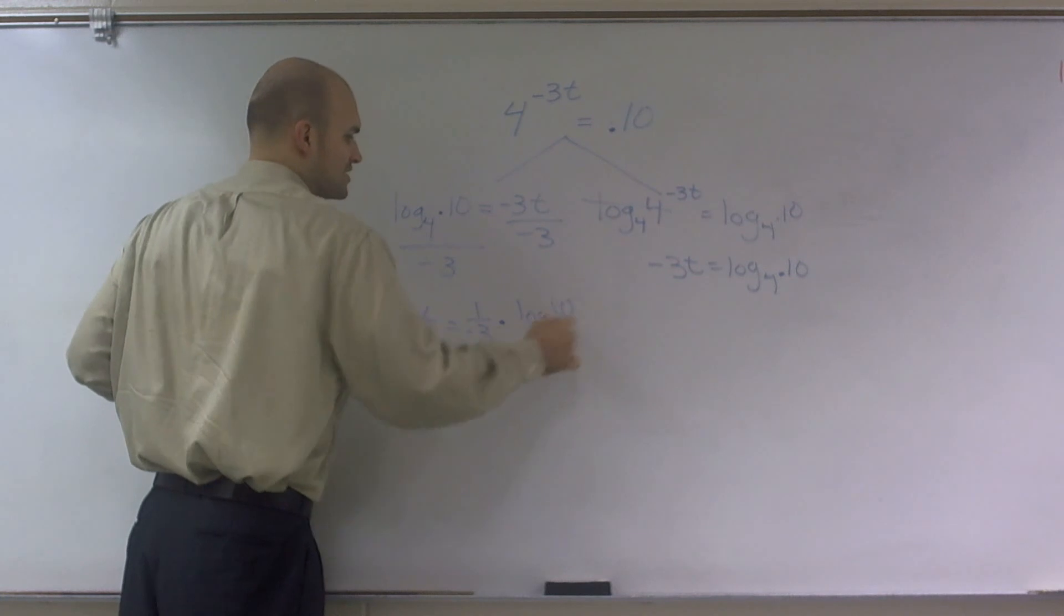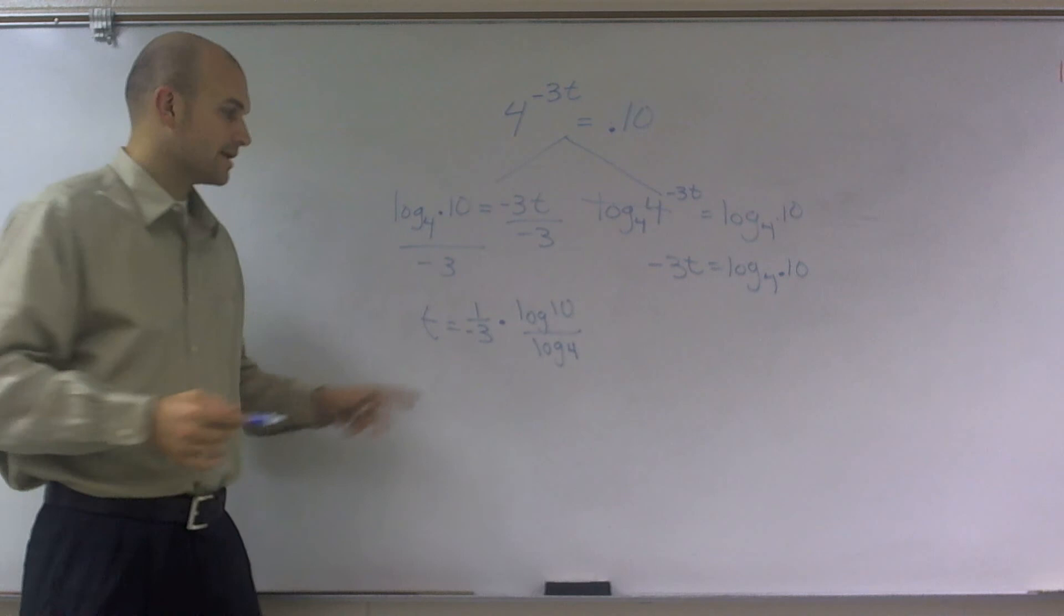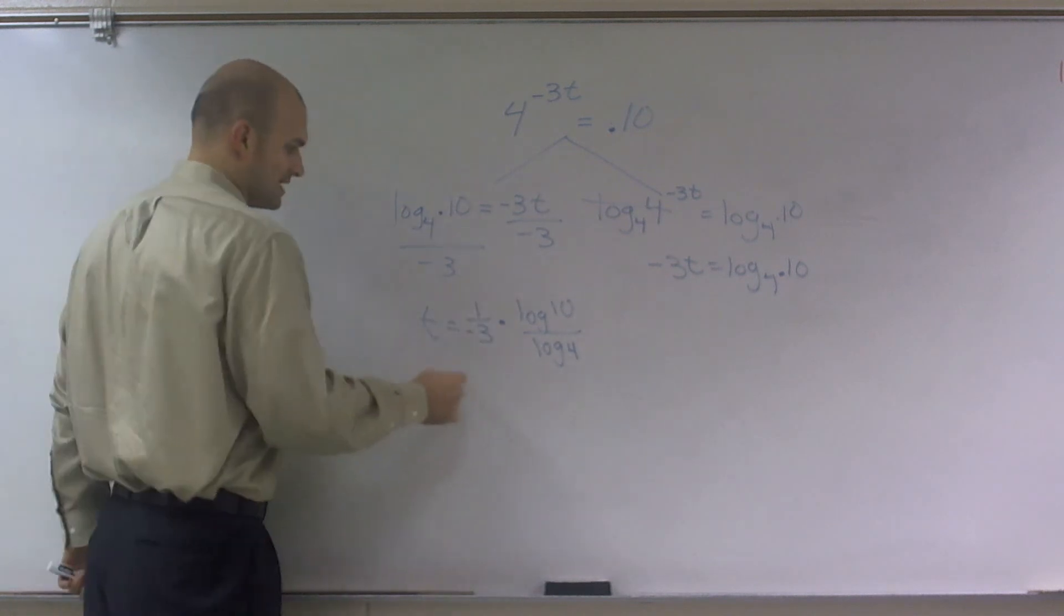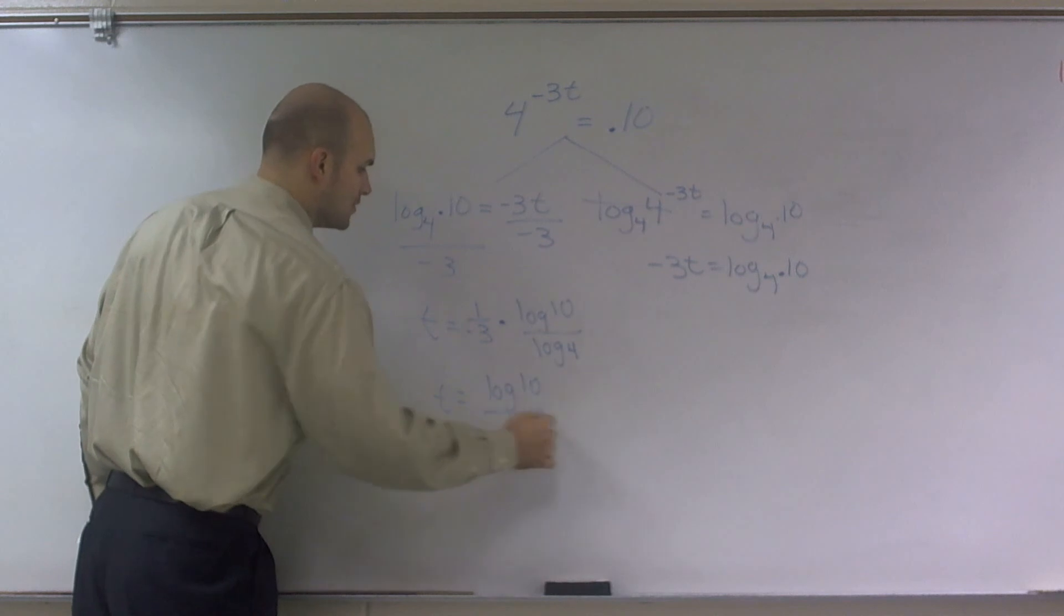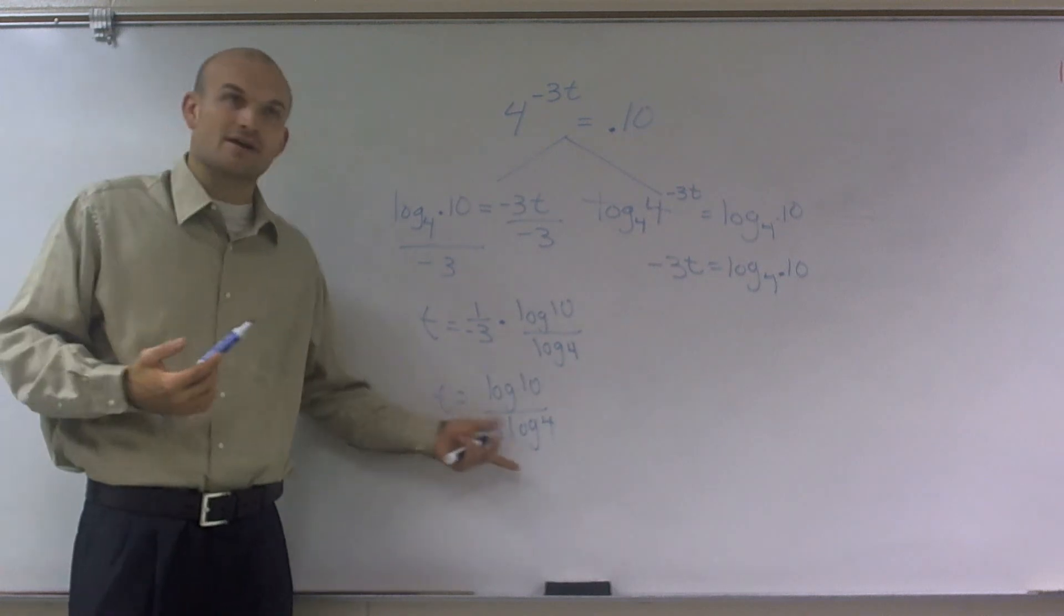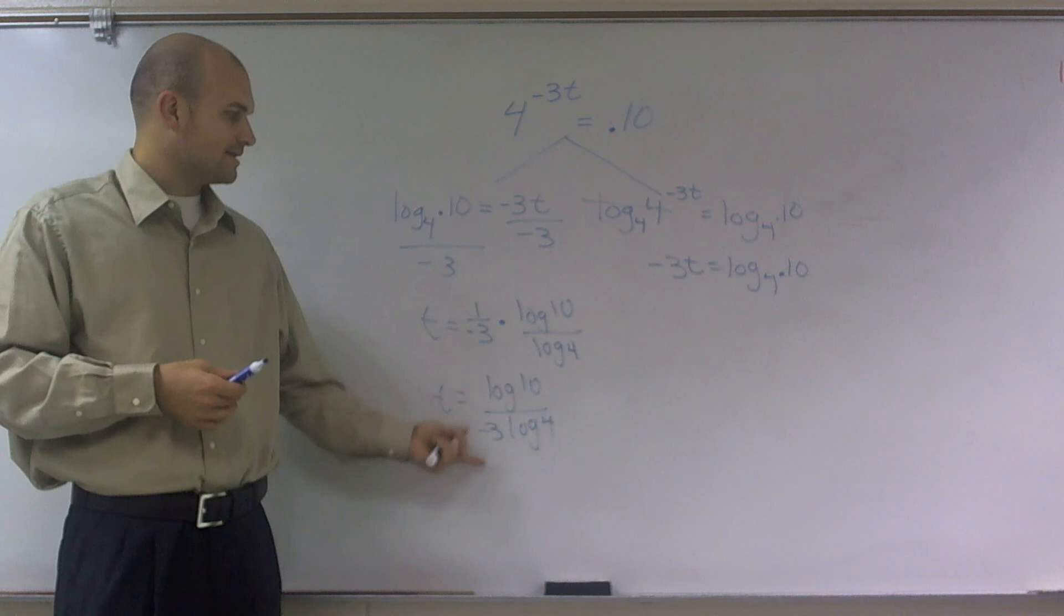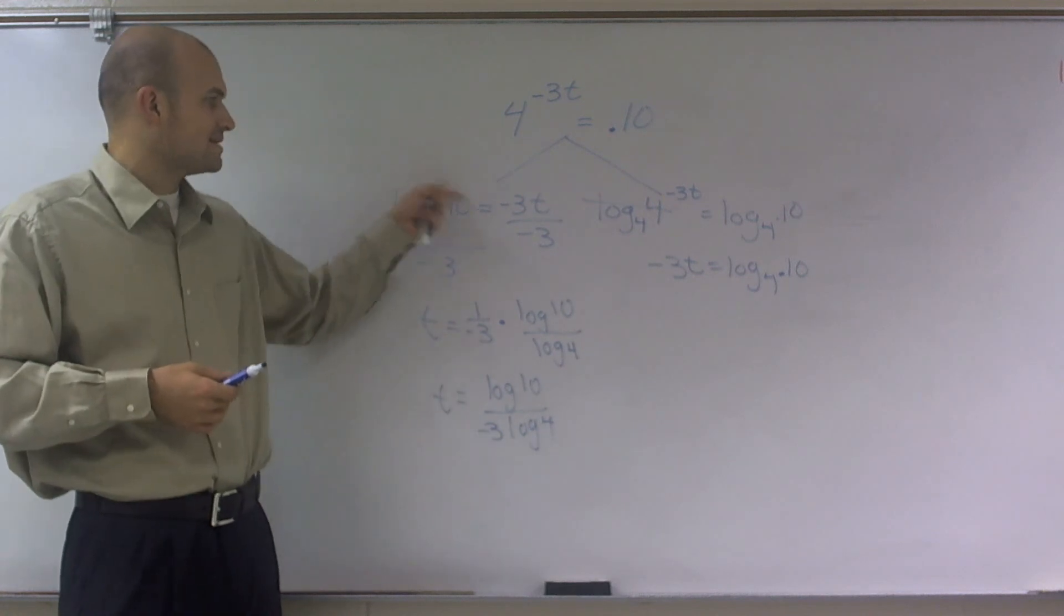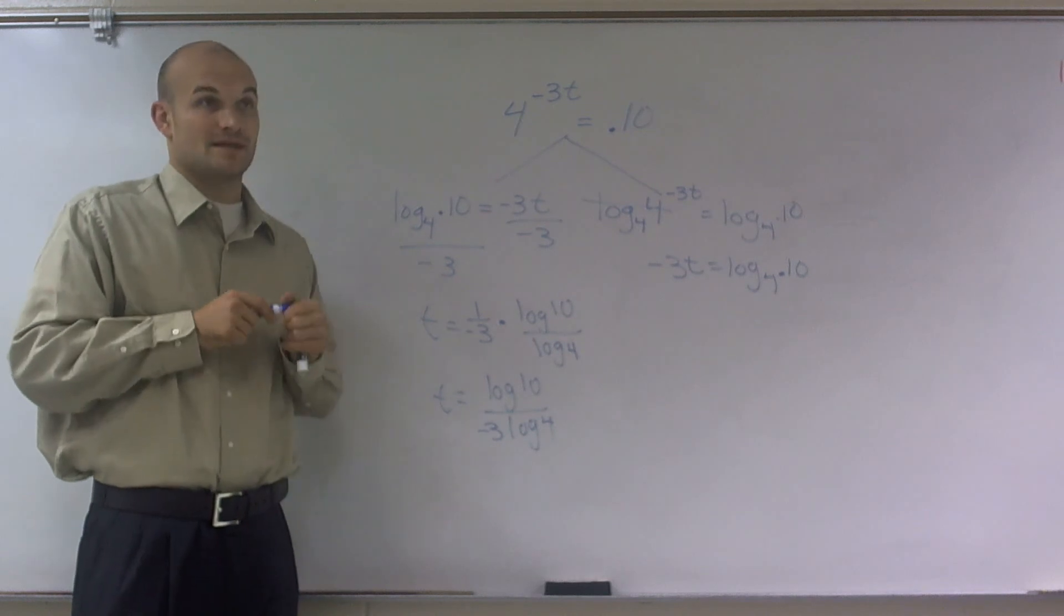And I can change this to change of base form. So therefore, my final answer is really t equals log of 10 over 3 log of 4, or negative 3 log of 4. And just remember, like I said, I don't have a calculator, so just evaluate that by plugging in with your calculator. You can just type this in: log of 0.10, divide by log base 4, then divide by negative 3 to get your final approximate answer.